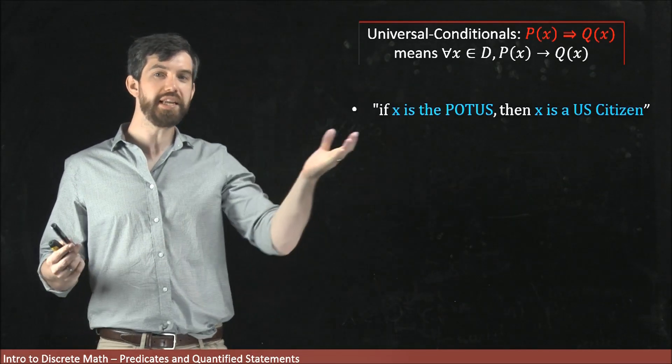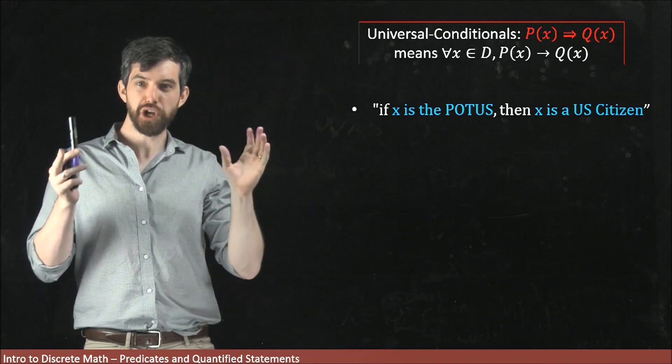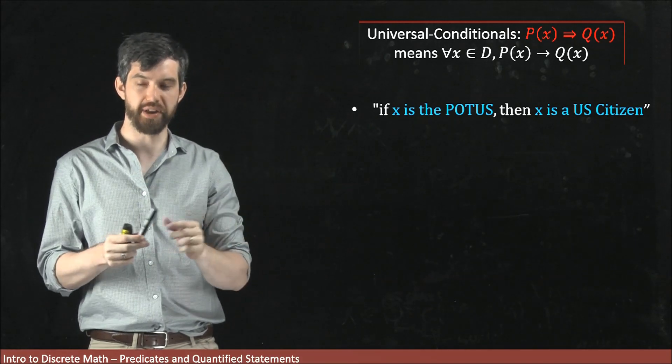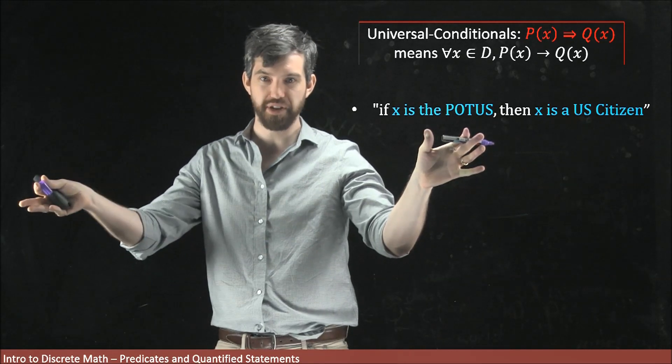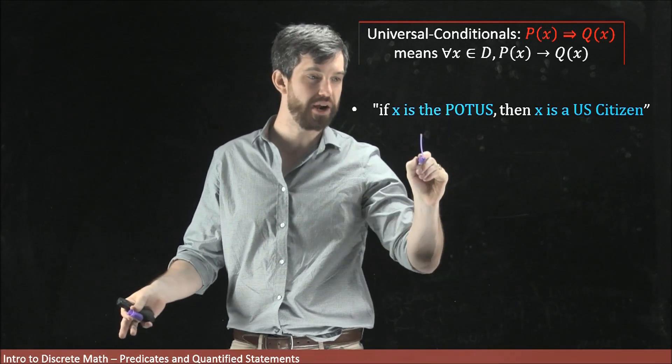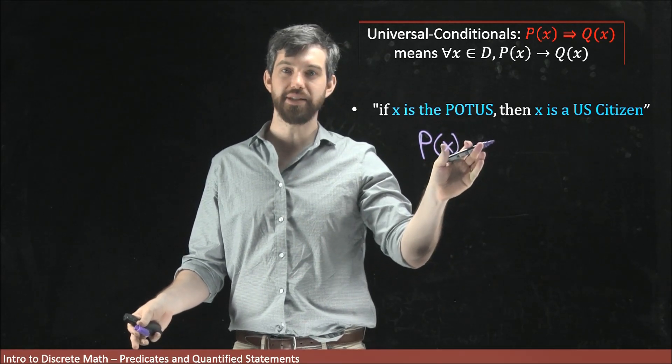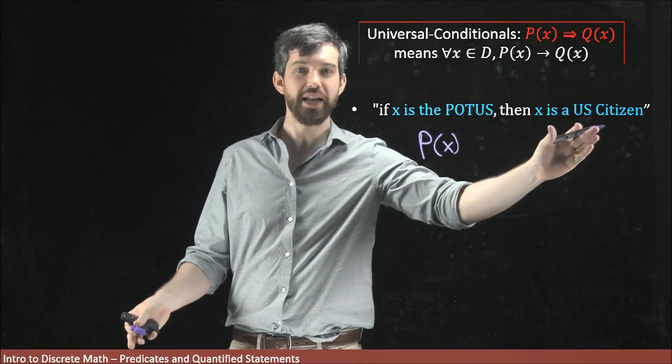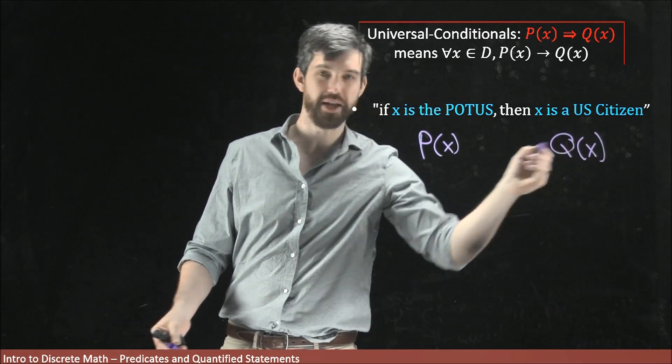Let's take a look at this mathematical sentence. This has two different predicates inside of it. First, if x is the POTUS, if x is the President of the United States, that's a predicate and I will call it P(x). And then it says that if this is true, then x is a US citizen, and I'll write that as a second predicate Q(x).